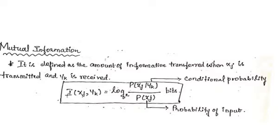Here, p(x_j | y_k) is the conditional probability and p(x) is the probability of the input. In general, we can say that mutual information between two random variables measures the non-linear relations between them. It basically indicates how much information can be obtained from a random variable by observing another random variable.